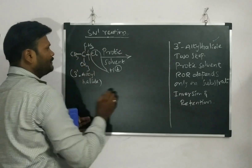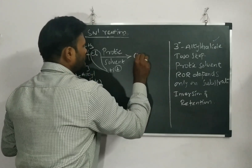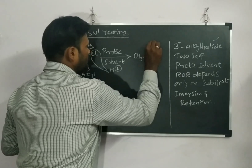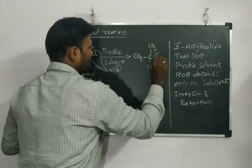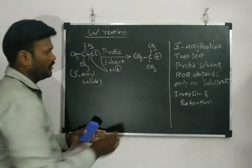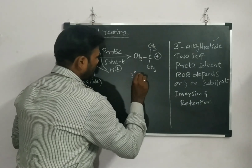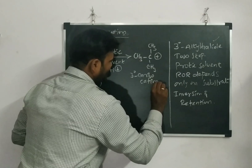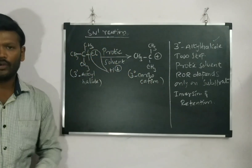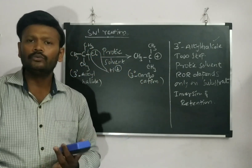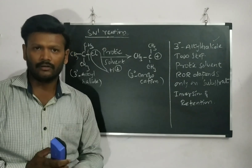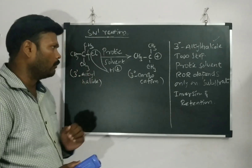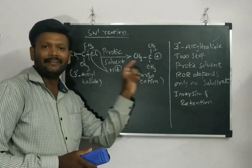What about the remaining part? The remaining thing is a carbon with three CH3 groups and one positive charge — this is a 3rd degree carbocation. This is the most stable carbocation. Among 1st degree, 2nd degree, and 3rd degree carbocations, the 3rd degree carbocation is the most stable one, which is why it is formed here.